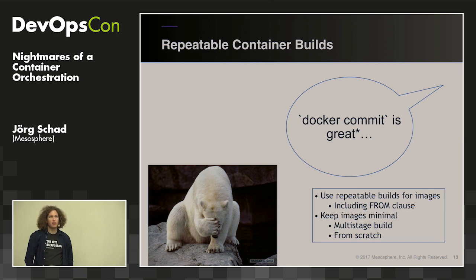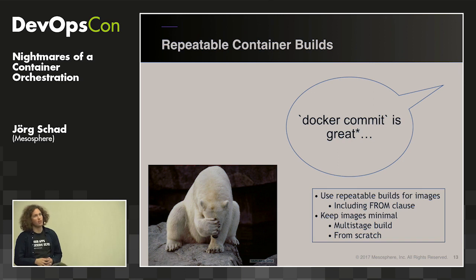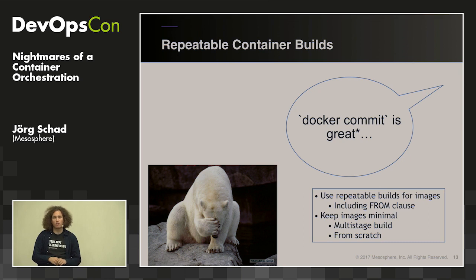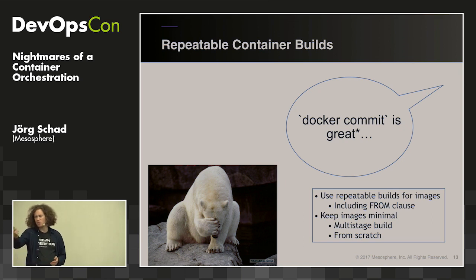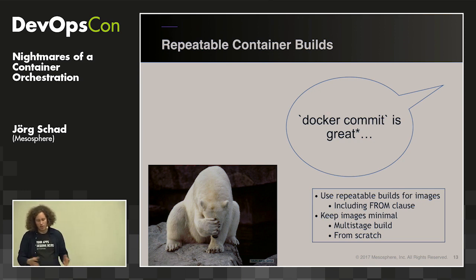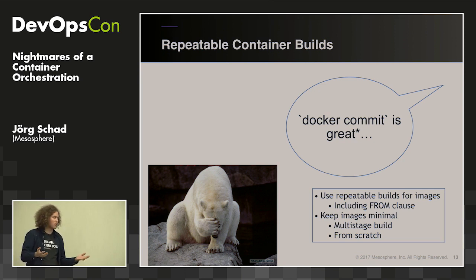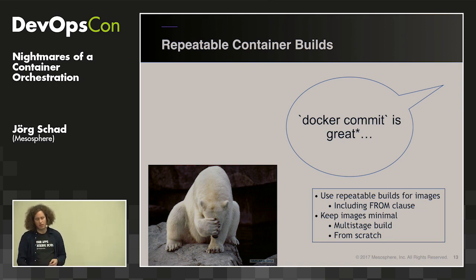Multi-stage builds are really your friend here. If you need a large environment for building — like pulling in the entire C++ build tool chain — you usually don't want that in your final container. Use multi-stage builds and 'FROM scratch' to keep dependencies and image sizes minimal. It also reduces the attack surface because you don't have any unnecessary libraries.